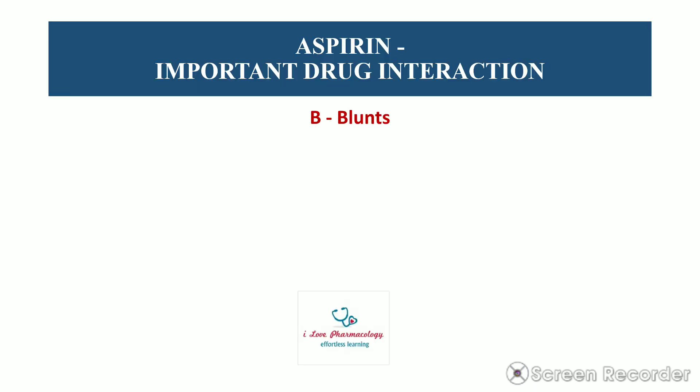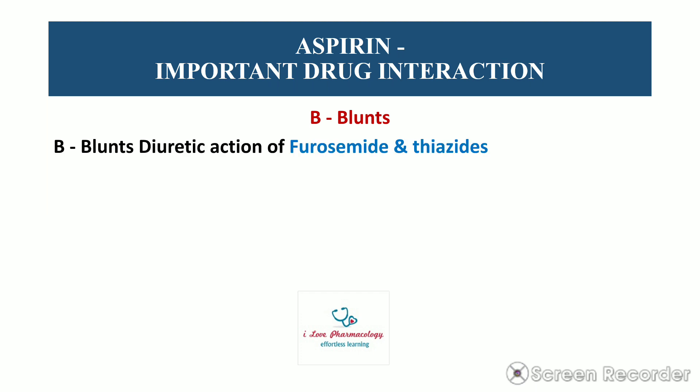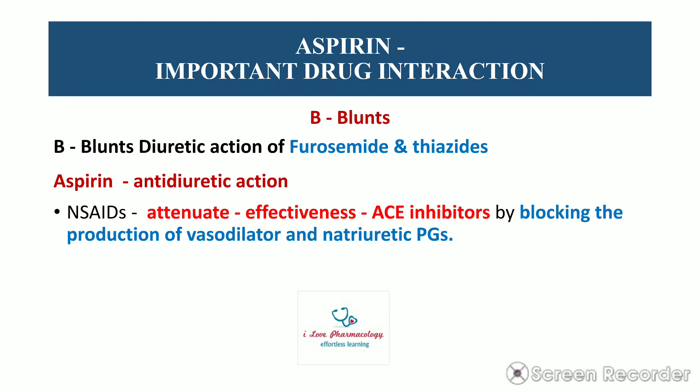The second drug interaction: Aspirin Blunts the diuretic action of furosemide and thiazides. Furosemide and thiazides are diuretic agents. Aspirin, by inhibiting renal prostaglandins — which have a diuretic action — produces an anti-diuretic effect. So aspirin produces anti-diuretic action by blocking renal prostaglandins.